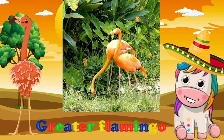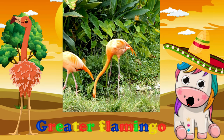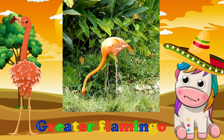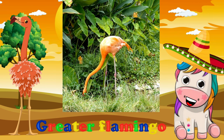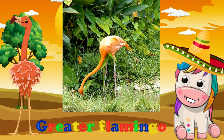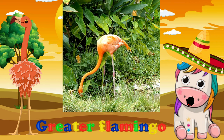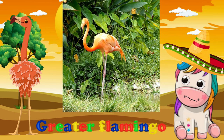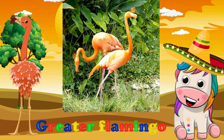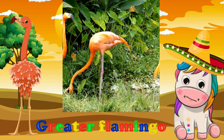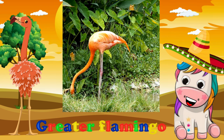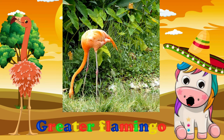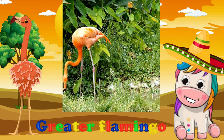The greater flamingo is the most widespread and largest species of the flamingo family. Common in the Old World, they are found in Northern and Sub-Saharan Africa, the Indian subcontinent, the Middle East, the Levant, the Persian Gulf, the Gulf of Aden, the Red Sea, and the Mediterranean countries of Southern Europe.